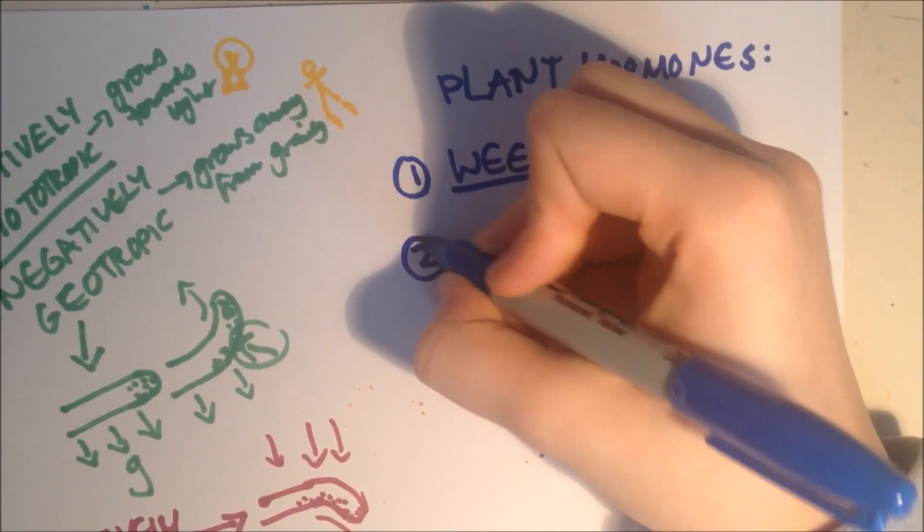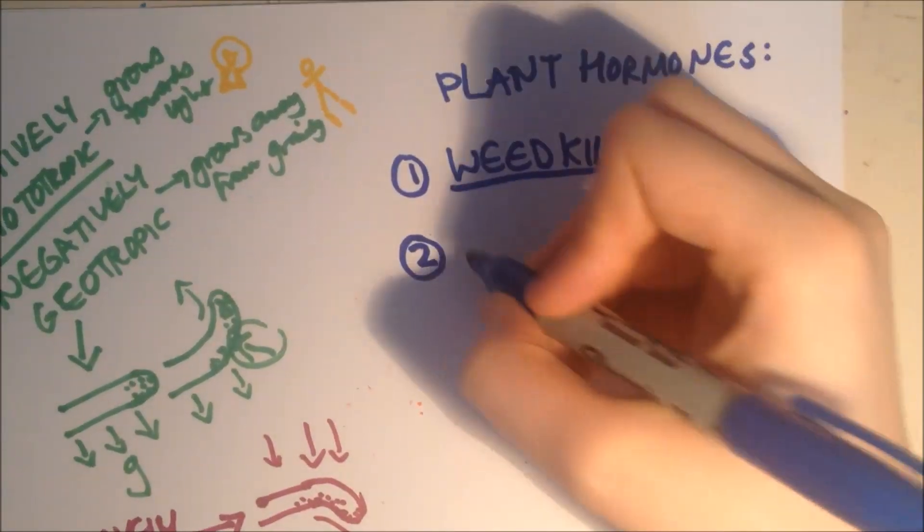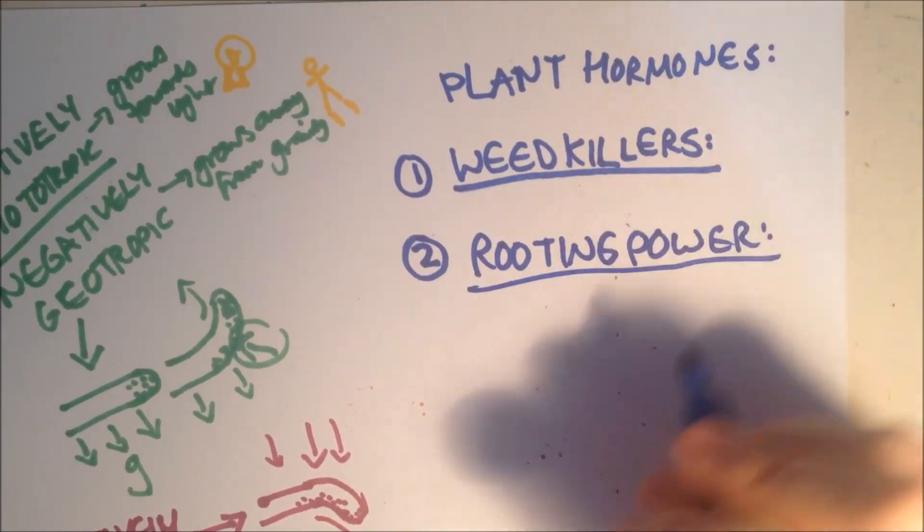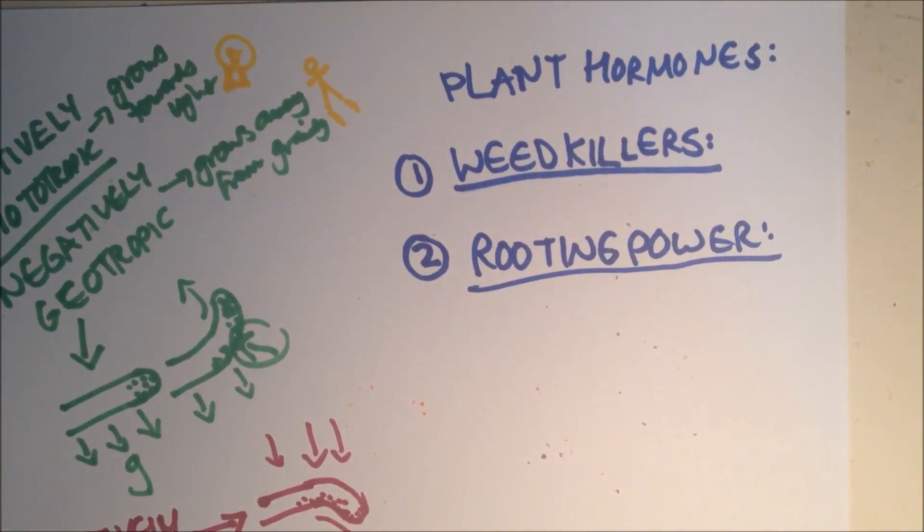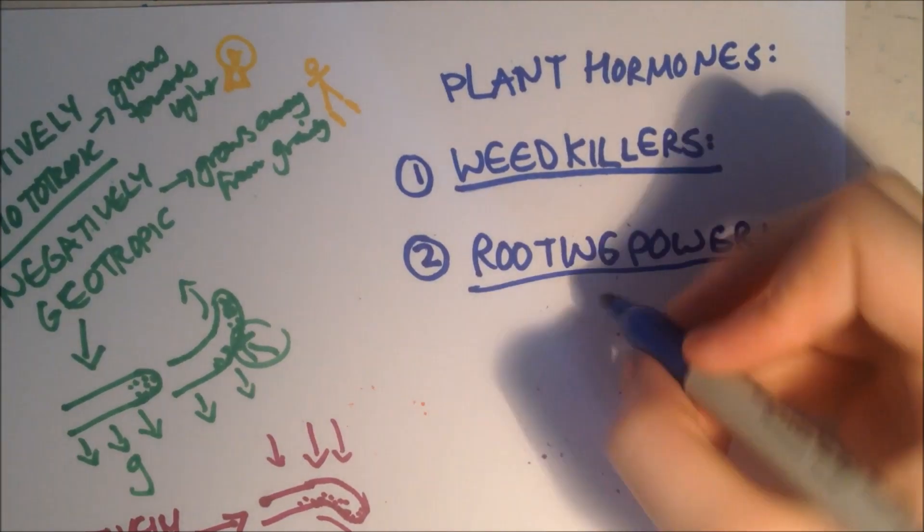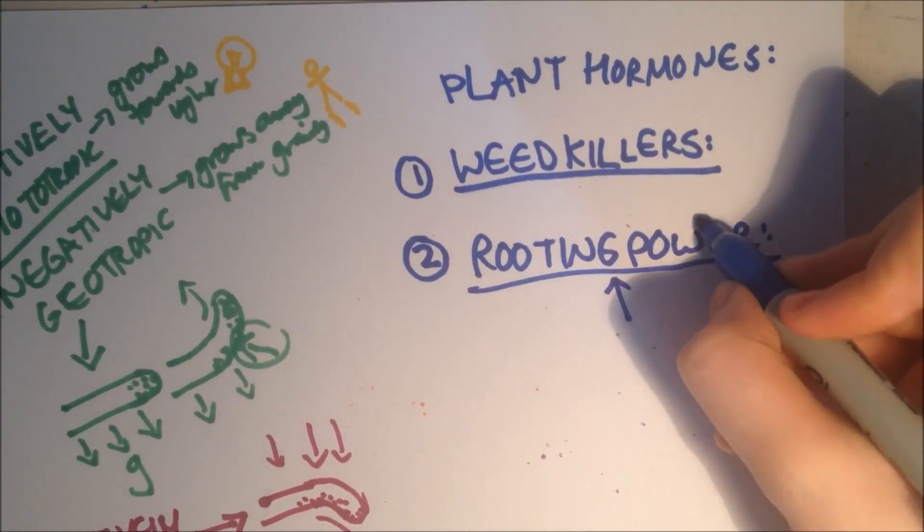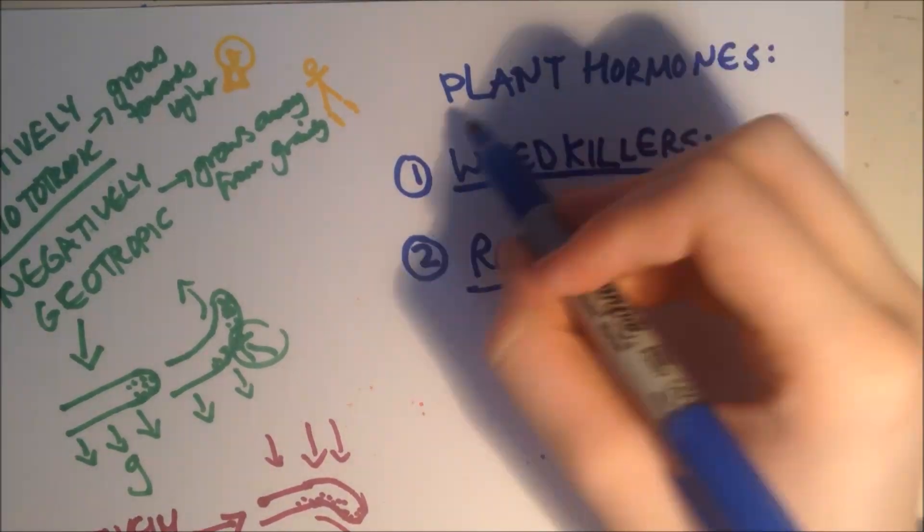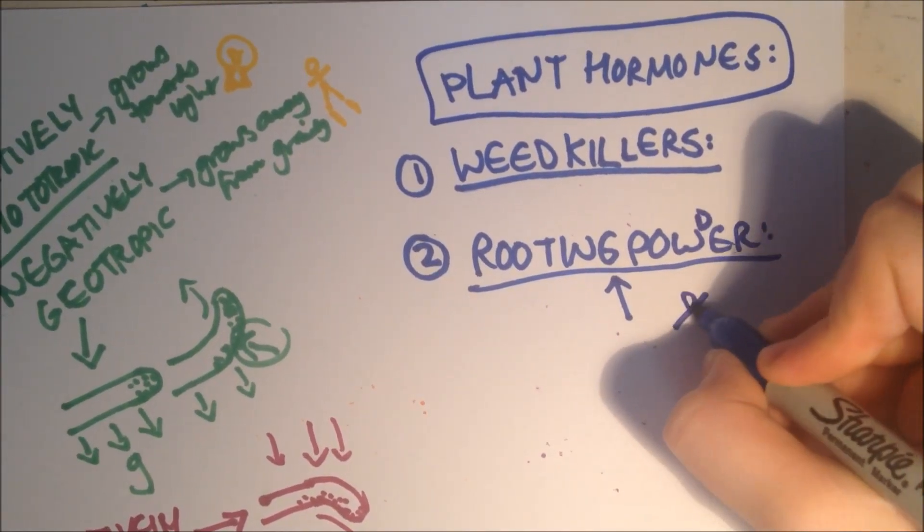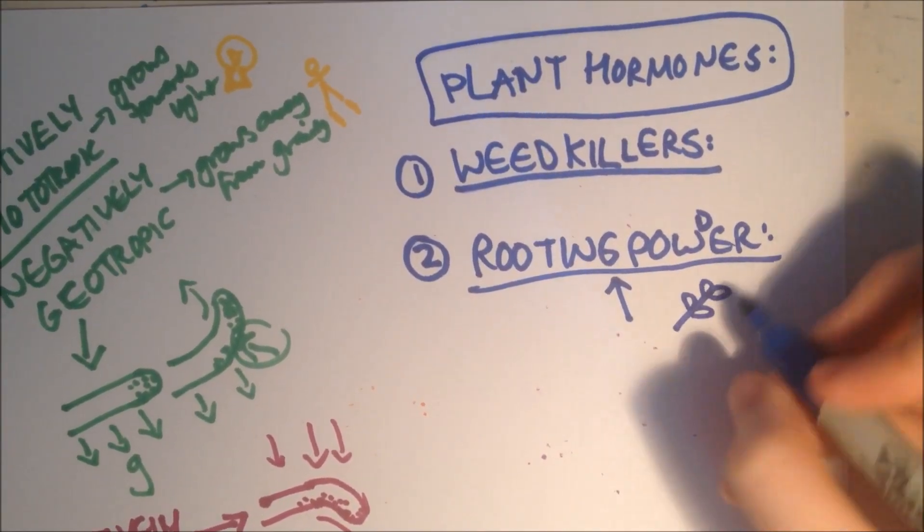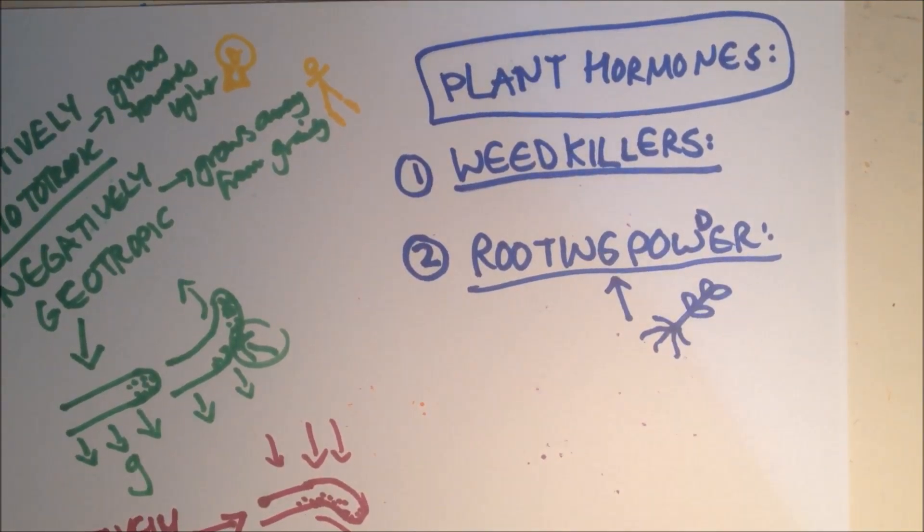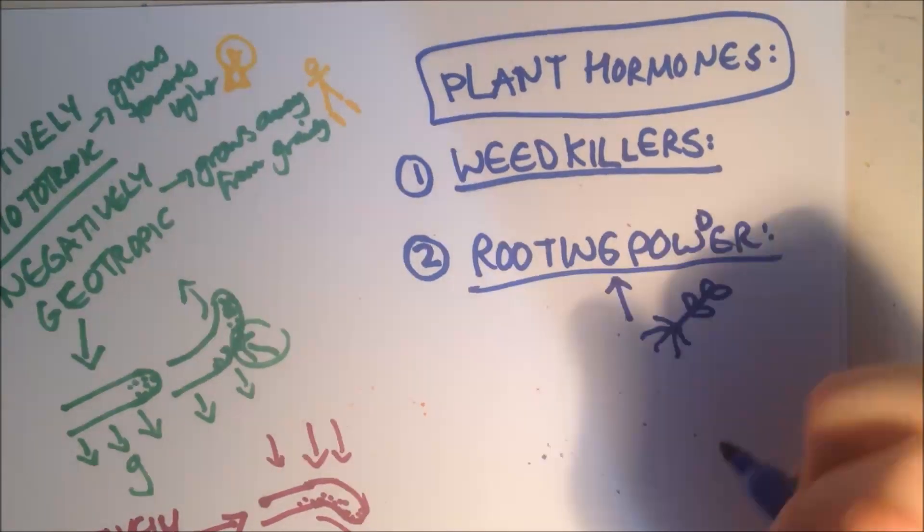You can grow from the cutting with rooting powder. A cutting is part of the plant that's been cut off, like the end of a branch. Normally if you stick cuttings in the soil they won't grow. But if you add this rooting powder, and it contains a plant hormone, they'll produce roots. This enables growers to produce lots of clones of a good plant really quickly, which is good.